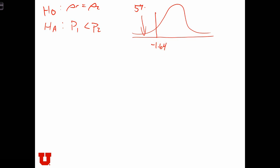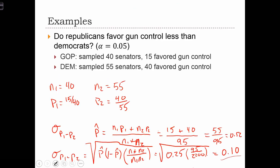All right. And let's calculate the statistic. Z equals P1 minus P2 over the standard error of P1 minus P2, which equals the difference between the two proportions, so 15 over 40 minus 40 over 55.